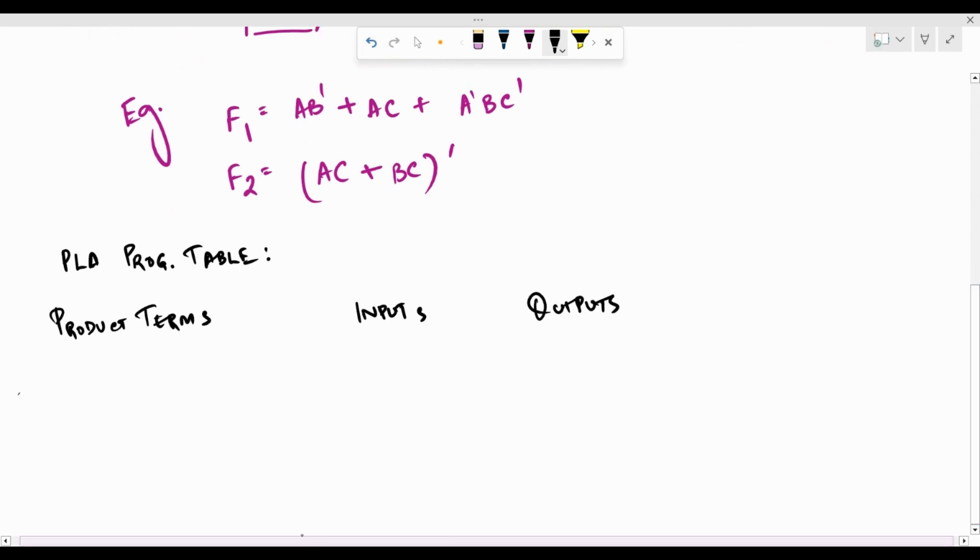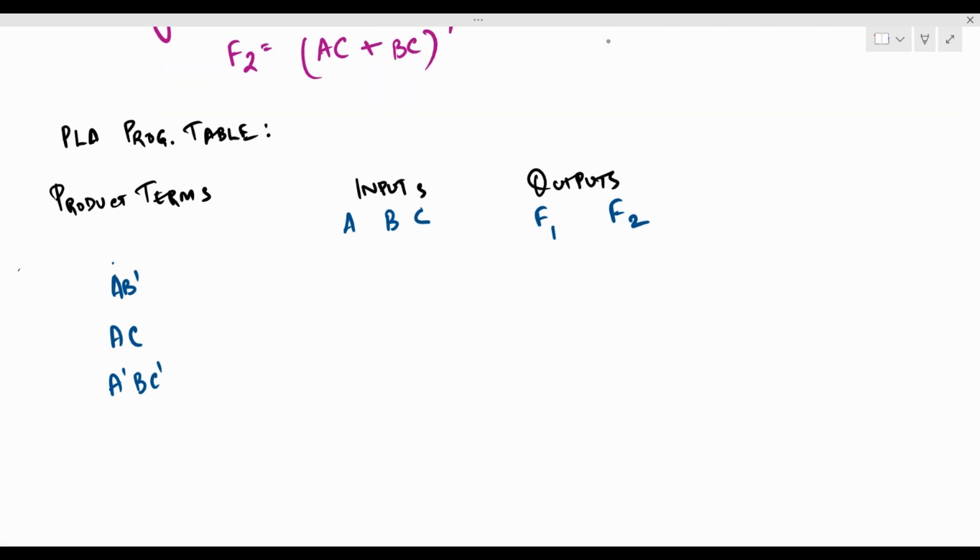So the PLA programming table consists of the product terms, all the inputs and the outputs. We know that the first product term is AB dash. From both of these expressions we can see that there are three inputs, A, B and C. There are two outputs, F1 and F2. The first product term is AB dash. Then we have AC, A dash BC dash. And in the second expression we have AC and BC. Since AC has been enlisted once, no need to rewrite that. So we just write out BC.